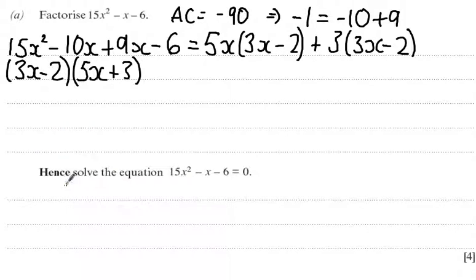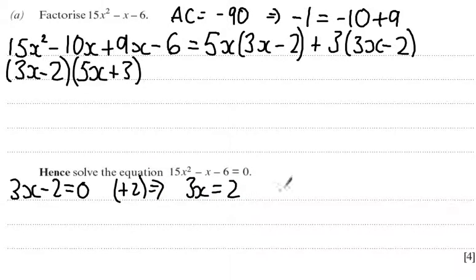Now I want to solve this quadratic. So if it's equal to zero, that tells me that 3x minus 2 must be equal to zero. So to solve this I'm just going to add 2. So I get 3x equals 2, and I'm going to divide by 3. So I get x equals 2 thirds.